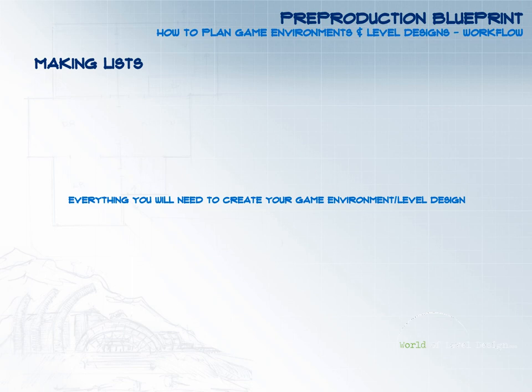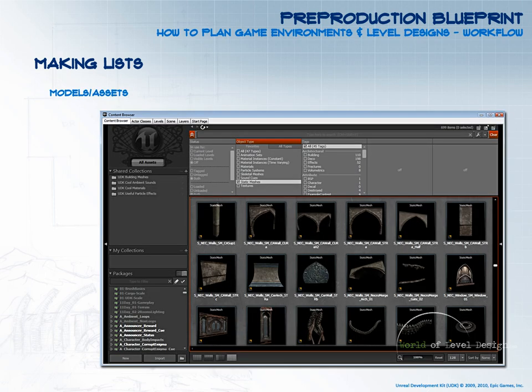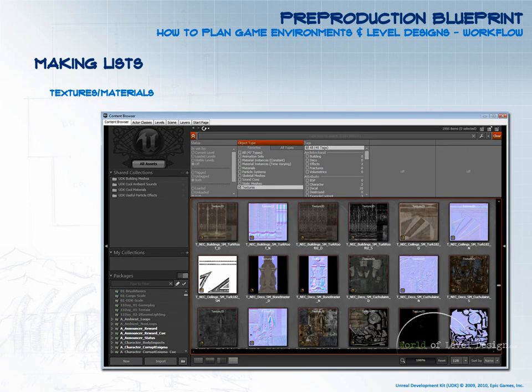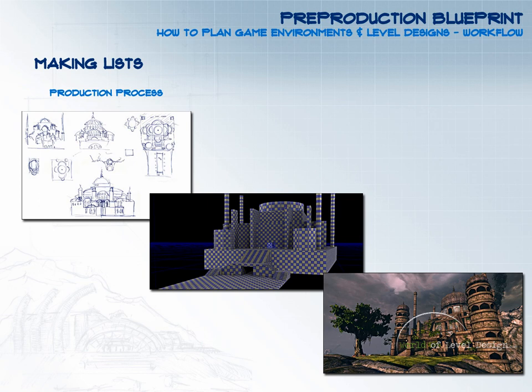The final step is to begin making lists — everything that you will need to create your game environment or level design. What models do you need? Do you need to create them yourself or can you use assets that already came with your level editor? What textures and materials do you need? What about the production process — what will be the steps from beginning to end, and how will you map your production stage: what will you do first, second, third, until the final piece is done? Lists are very important; they help me know what I need to do, create, and collect.